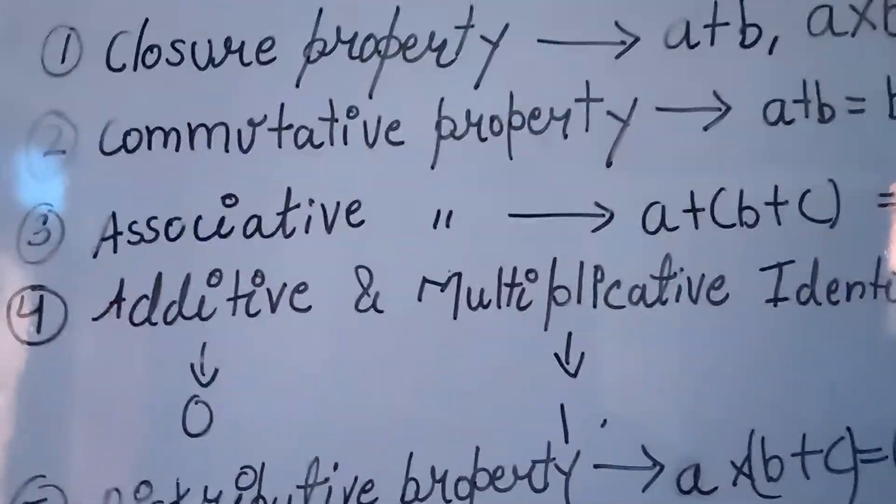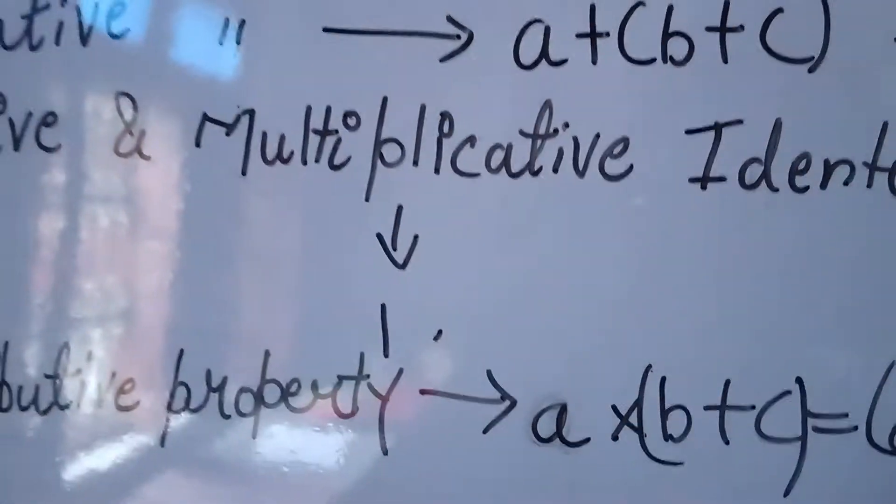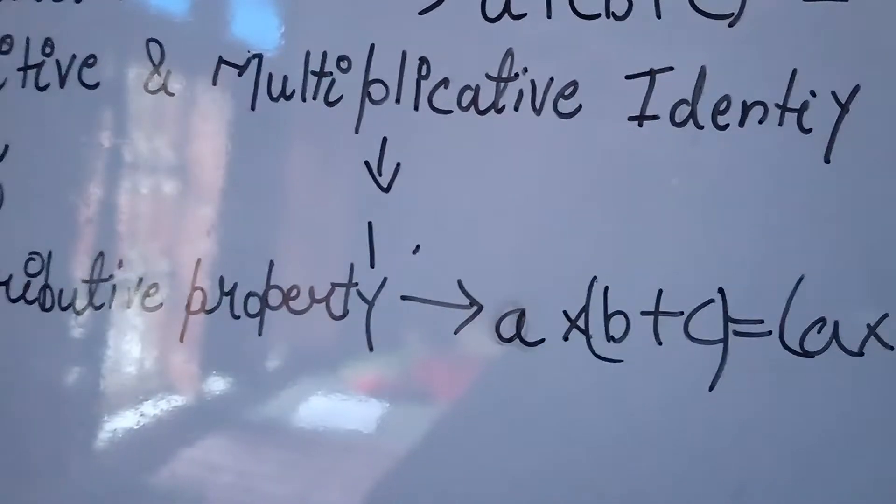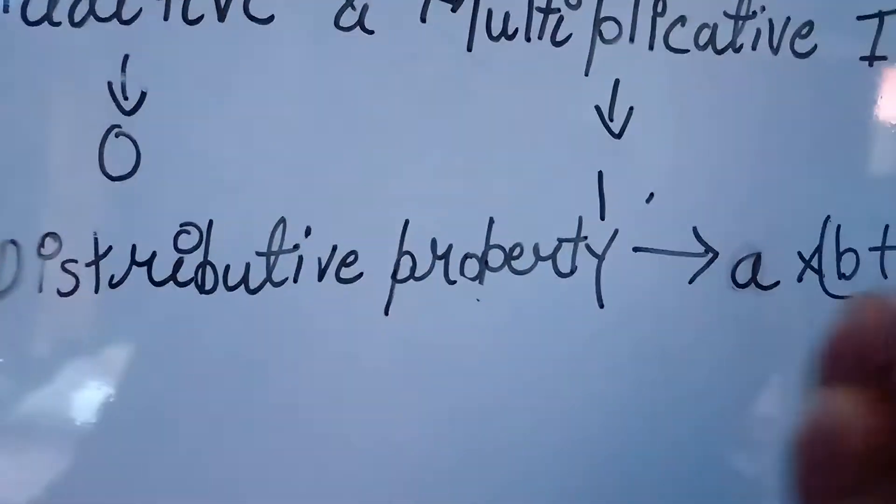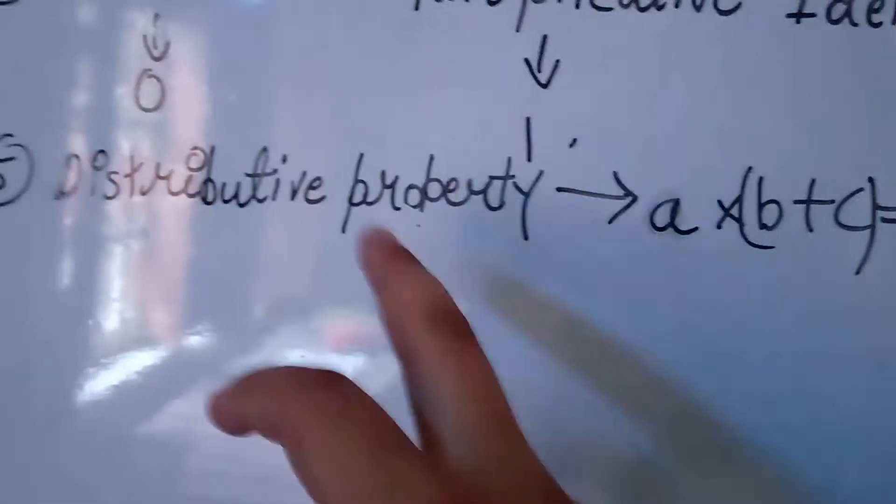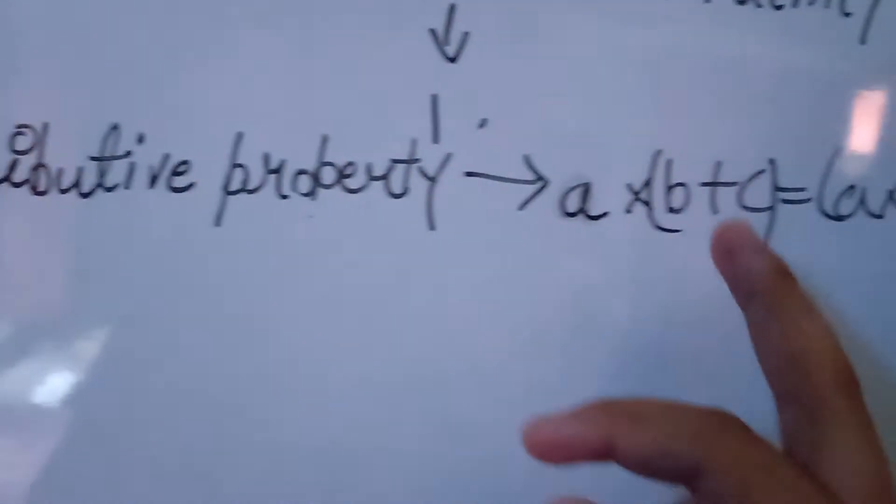then the answer is 1. This means that additive identity is 1, it means that if we add 1 to 1, the answer is 1. It means a into 1 is equal to 1. Distributive property: A into B plus C